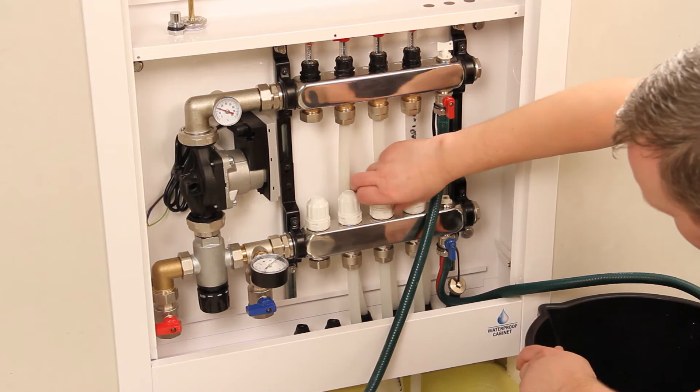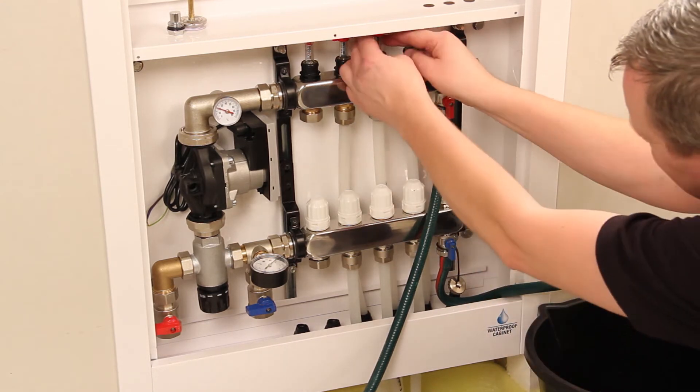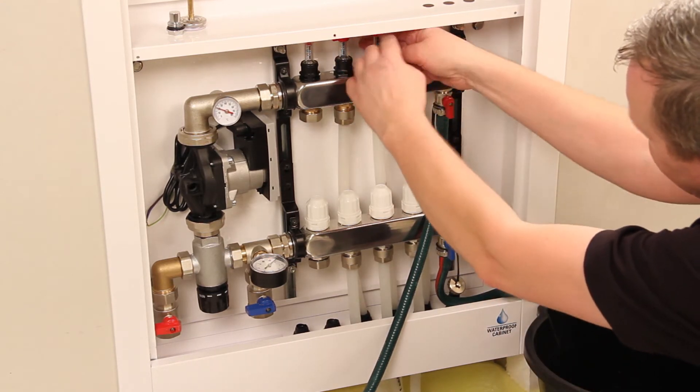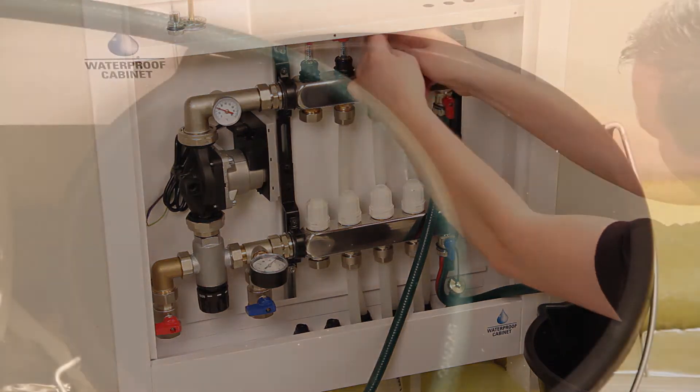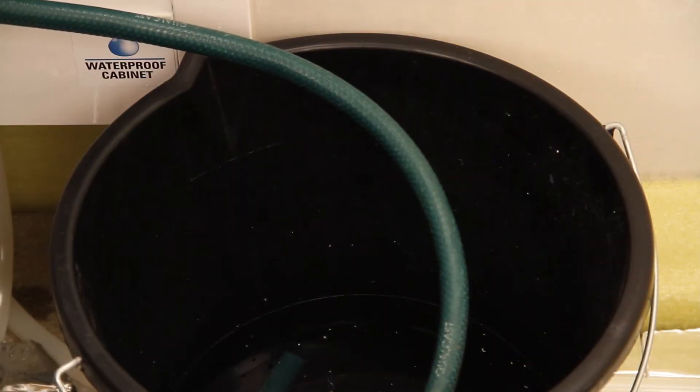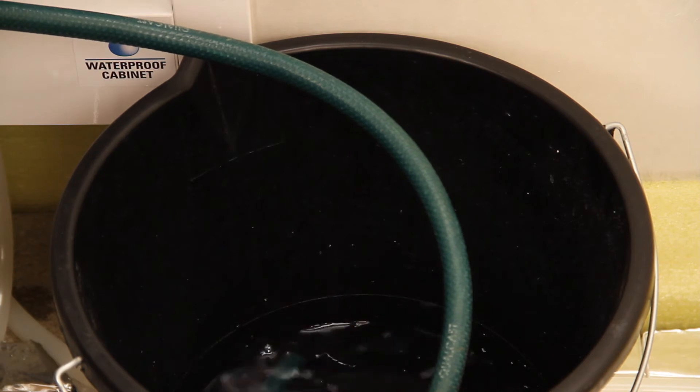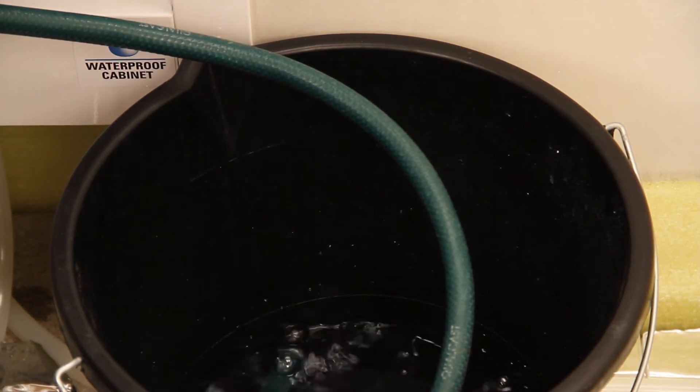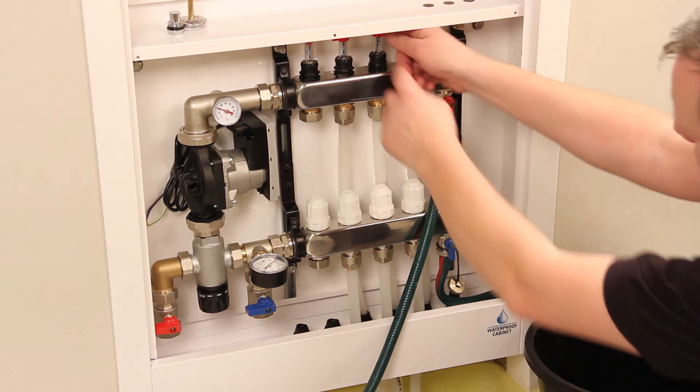Repeat this sequence opening the flow gauge and return valve for each individual circuit of pipe one at a time, purging all the air from the pipe and filling with water. Don't forget to keep an eye on the water level in the bucket and empty in between commissioning each circuit of pipe.